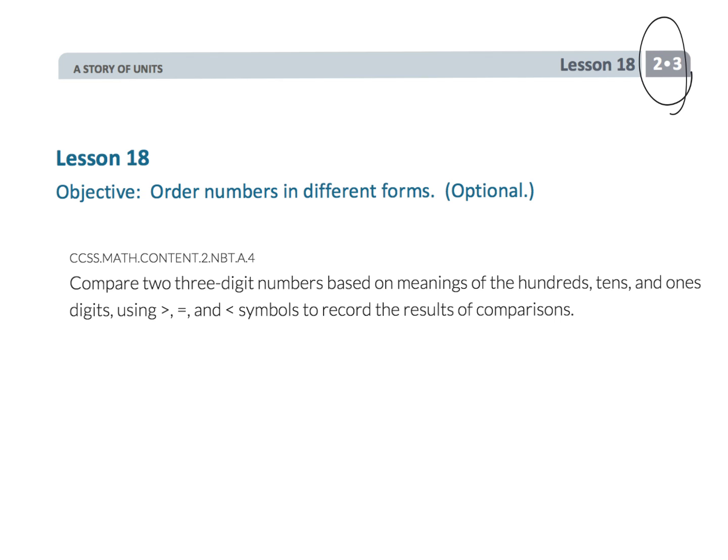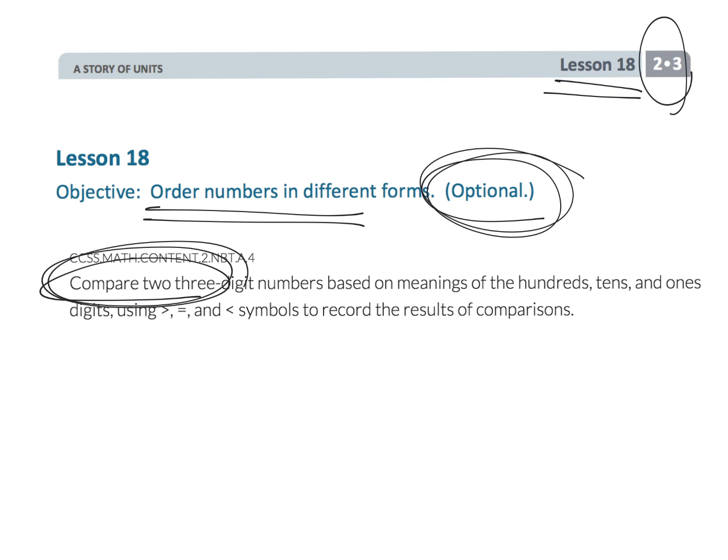And that wraps up second grade, module three, lesson eighteen. An optional lesson where we are comparing numbers, and we were comparing three numbers compared to the standards, which is only comparing two numbers.